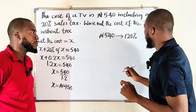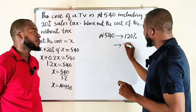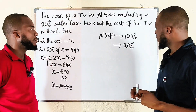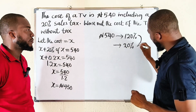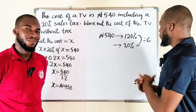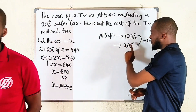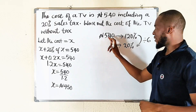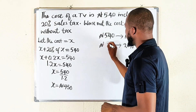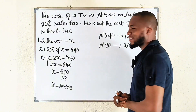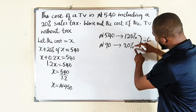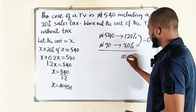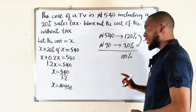We want to remove the 20% because we are interested in the original cost. We can divide 120 by 6 to obtain 20, so divide 540 by 6 as well — that gives us 90. So 20% equals 90 Naira. If you subtract 20 from 120 that gives you 100, so we are looking for that 100% which is the cost of the TV.